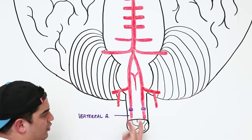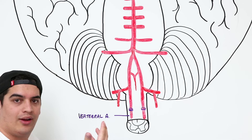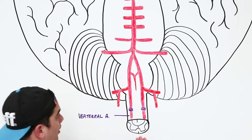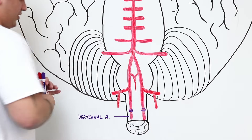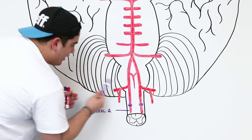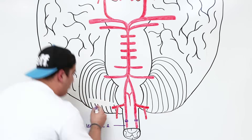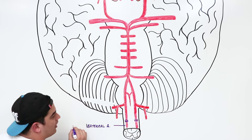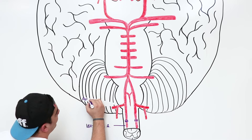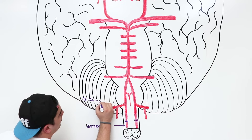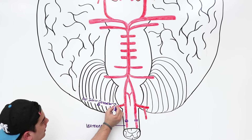The vertebral arteries run up through the transverse foramina of the cervical vertebrae, then proceed through the suboccipital triangle before entering the foramen magnum and moving upward. As they move upward, they give off branches — one very important branch is the posterior inferior cerebellar artery, or PICA.